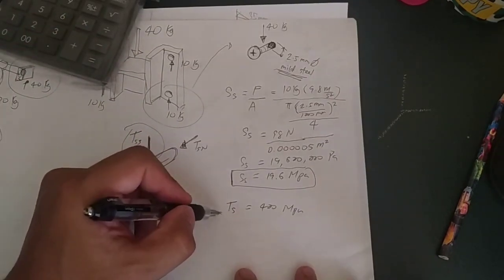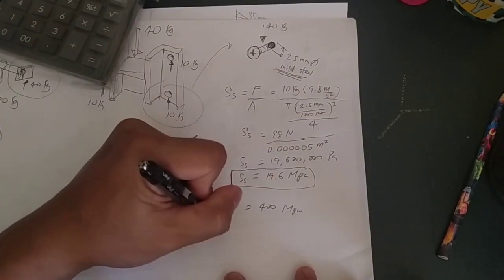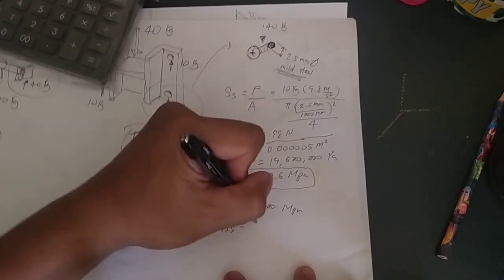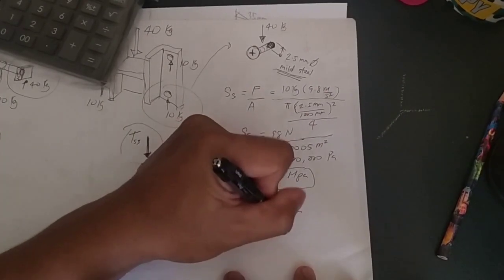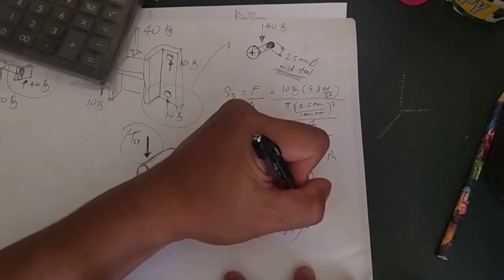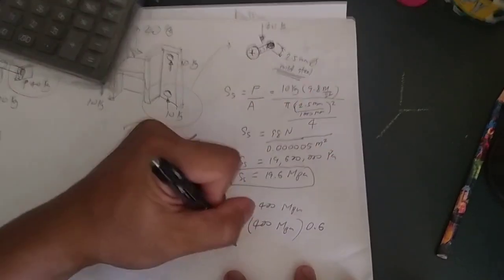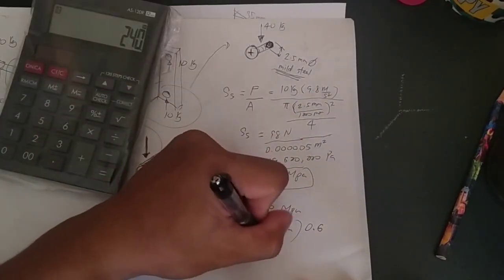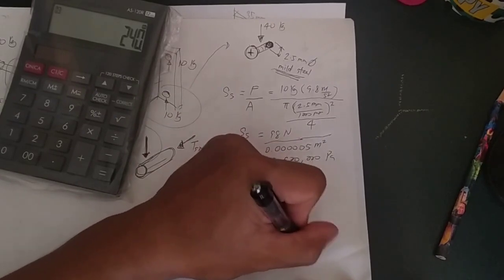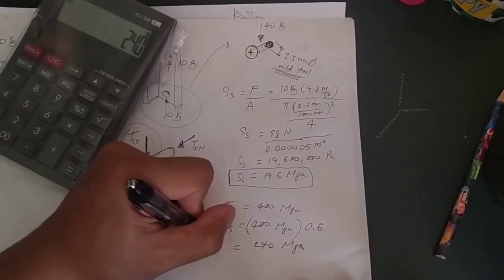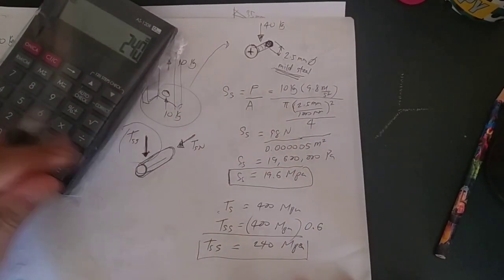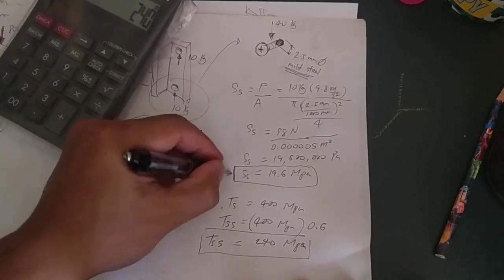The tensile strength in shearing is equal to 400 megapascal multiplied by a factor of 0.6, which equals 240 megapascal. Now this is tensile strength in shearing.